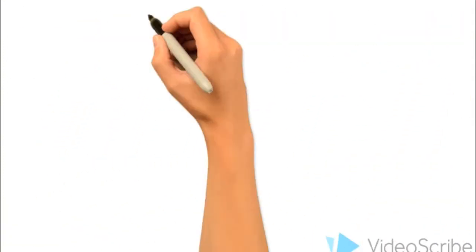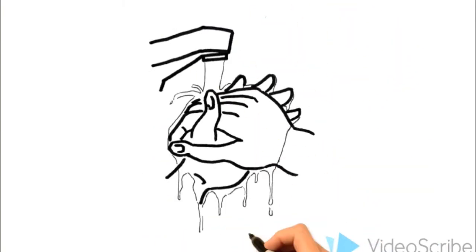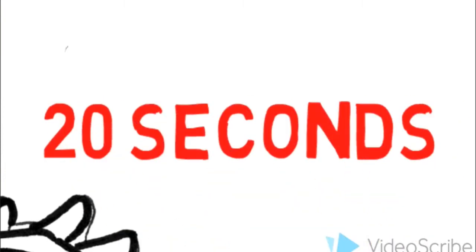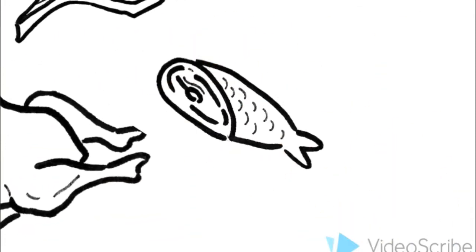Now on to food prep. Before you start cooking, it's important to wash your hands with warm, soapy water for at least 20 seconds. It's also really important to wash your hands before and after touching raw meat, poultry, fish, and seafood.